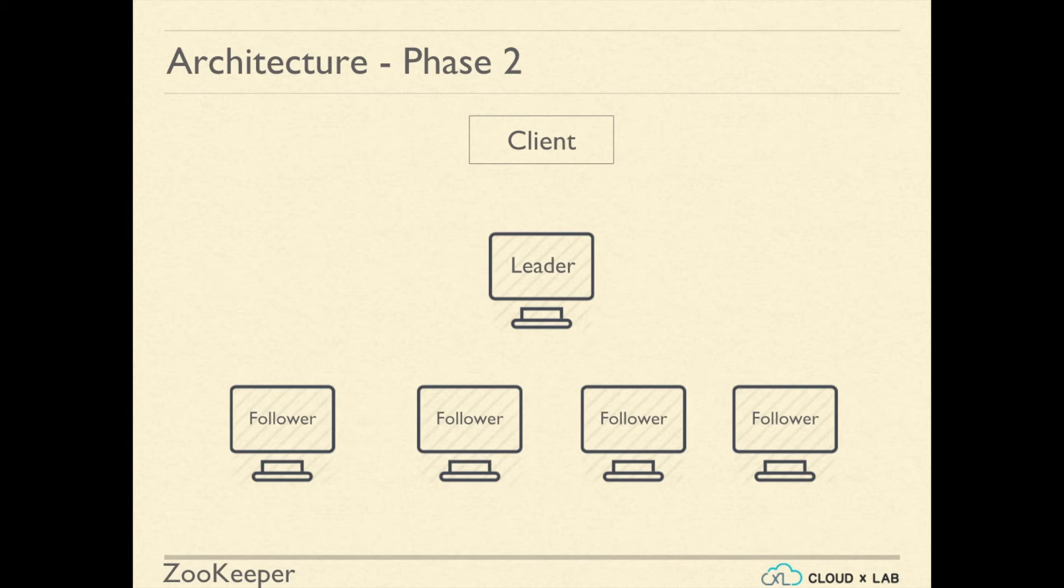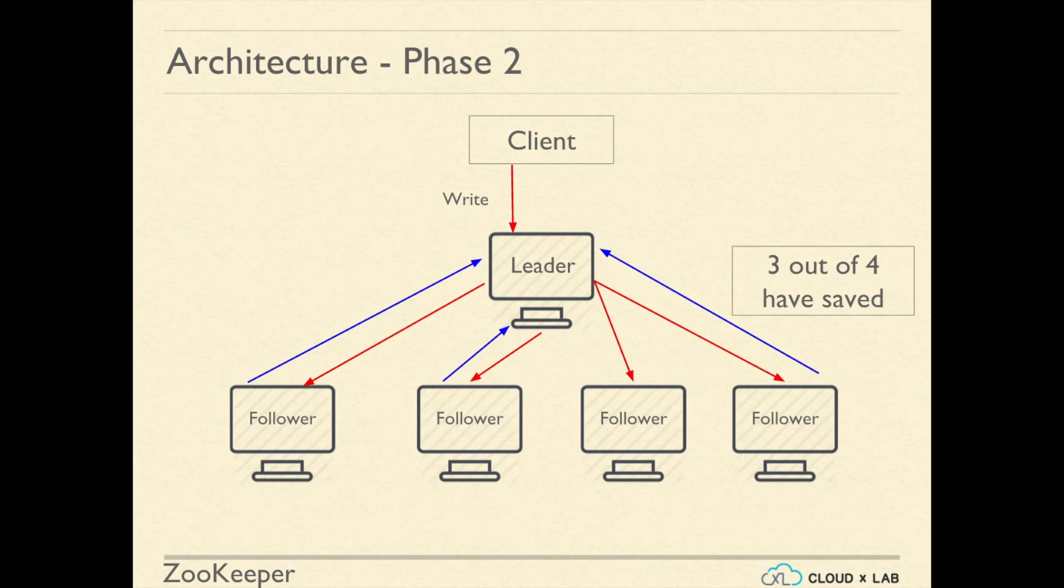The request to read data such as LS or GET is scattered by all of the machines. Once the leader has accepted a change from the user, the leader broadcasts the update to the followers. When the majority have saved or persisted the change to the disk, the leader commits the update and the client or user is sent a confirmation.